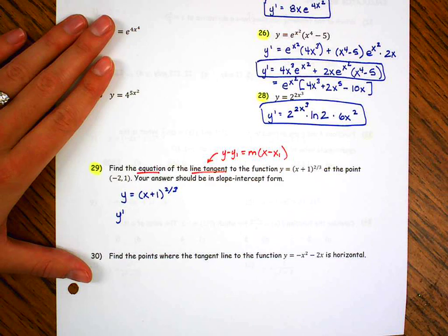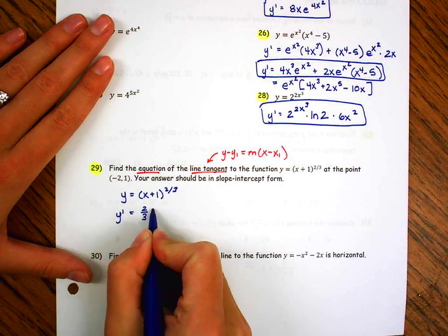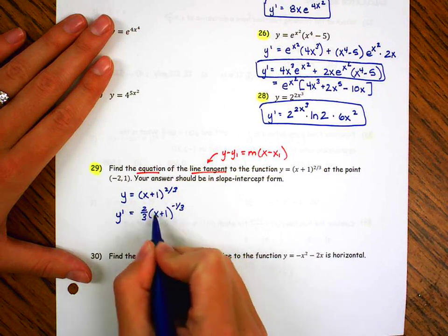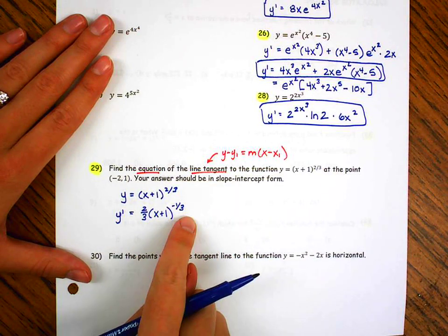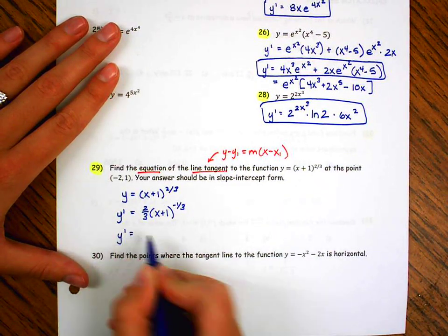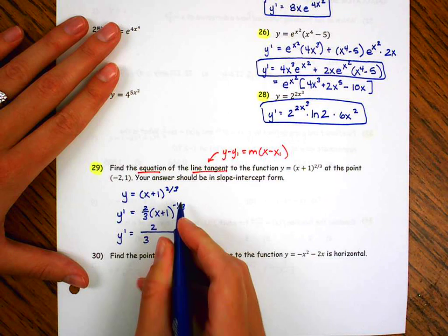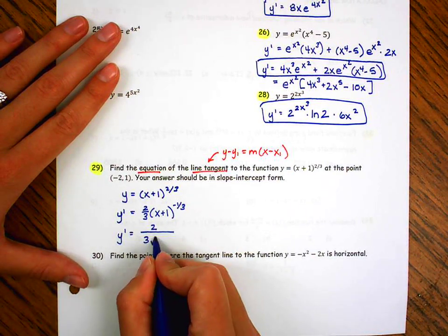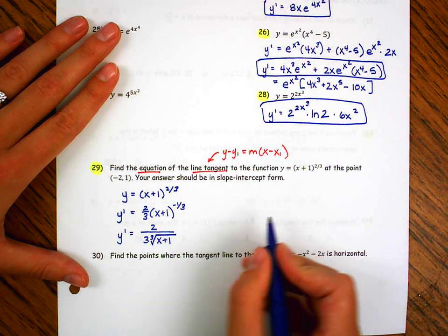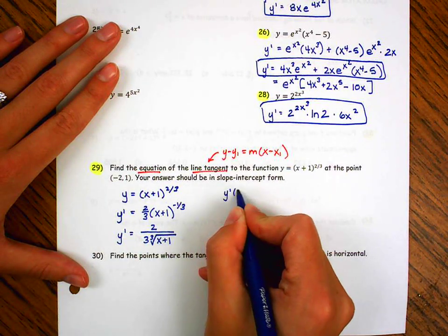The first thing I'm going to do is take the derivative of that function. This is already written in a power rule form. It's a power rule with a chain rule, but that's easy to take the derivative of. So I'm going to take my 2 thirds. It's going to go down to the front. I subtract 1. I need to multiply by the derivative of the stuff. Well, the derivative of this is just 1, so I can put times 1, but I really don't have to. I'm going to rewrite this in a form that's a little bit easier for me to comprehend. So that 2 is going to stay in the numerator. That 3 is going to go in the denominator. And then this is a negative exponent, so it goes in the denominator. And the 1 third tells you to take the cube root.